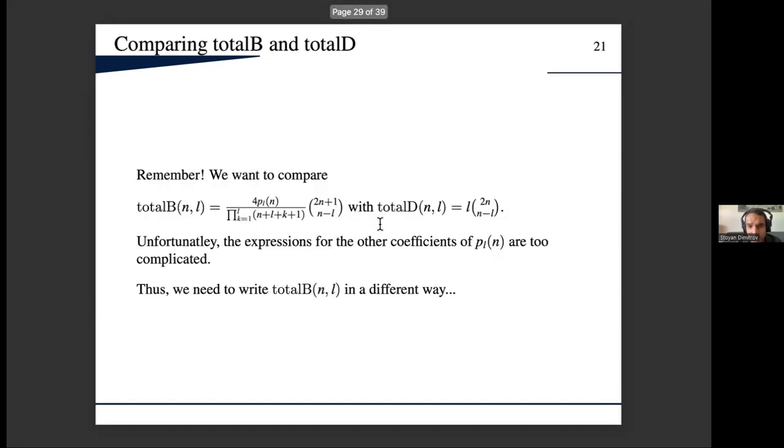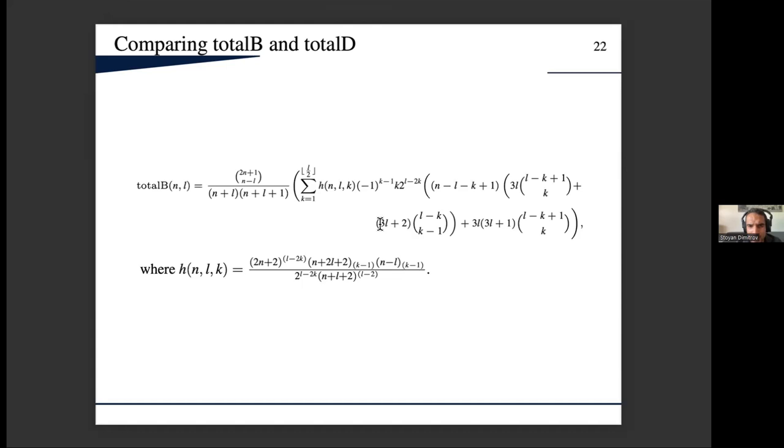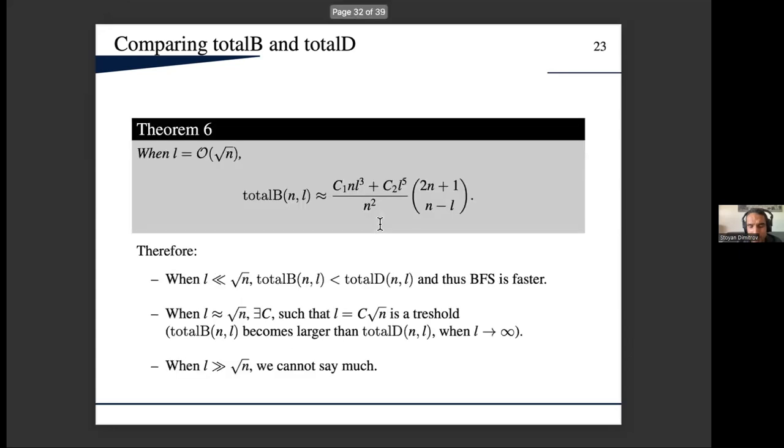But again, we needed to rewrite total B one more time, and we did this. We used that expression for total B. Here the nice thing is that these functions h are bounded when l is big O of root n, and this allowed us basically to get our main result, which is here. We basically got the asymptotic of this total B when l is big O of root n.